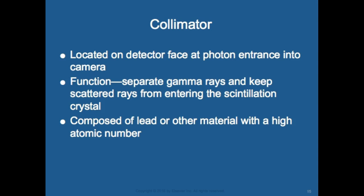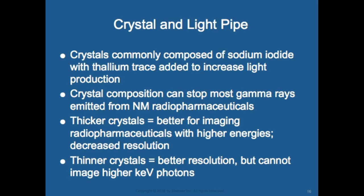The collimator's function is to separate gamma rays and keep scatter rays from entering the detector — just like in other imaging, they want to remove scatter rays from the diagnostic data. It is composed of lead or other high atomic number material.